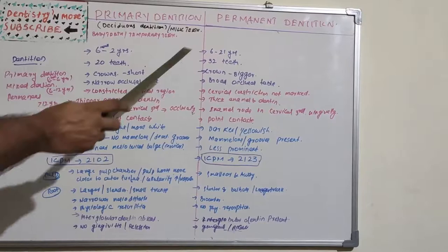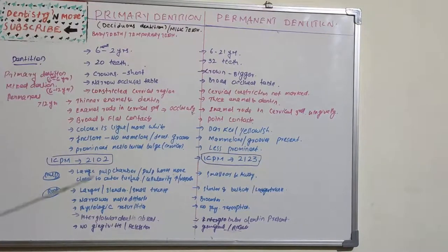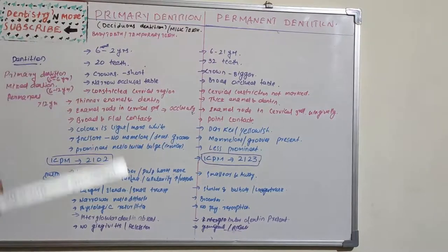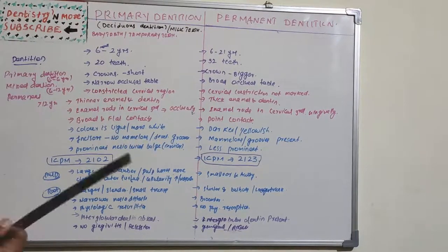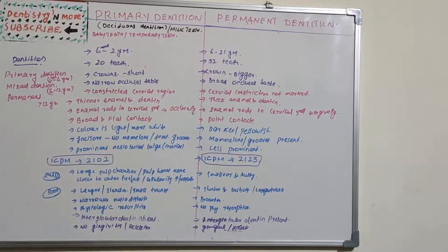The last tooth to erupt in permanent dentition is the third molar, which also varies from person to person — it may erupt as early as 17 years or be delayed up to 20 to 23 years. Before going into the differences, we need to divide dentition into three phases: primary dentition, mixed dentition, and permanent dentition.